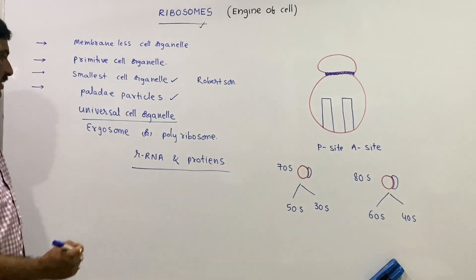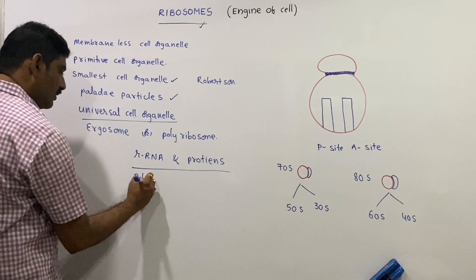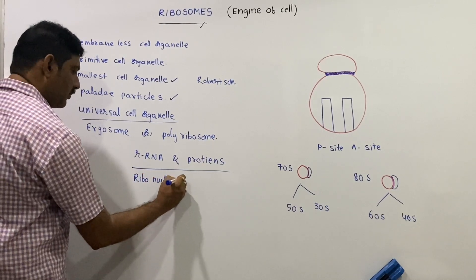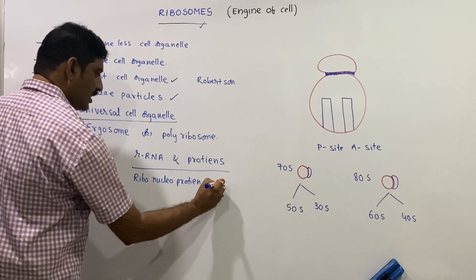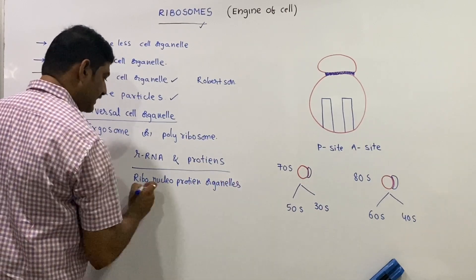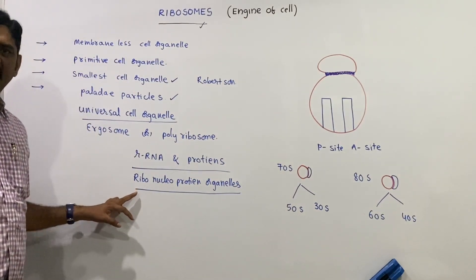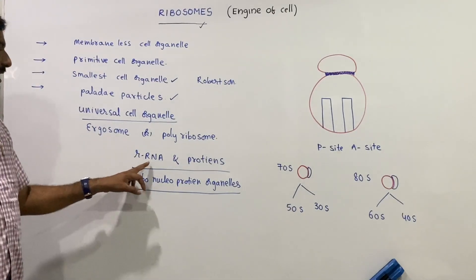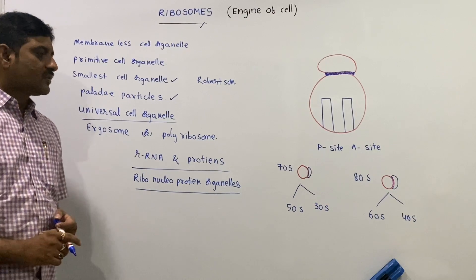Ribosomes are made up of rRNA and proteins.